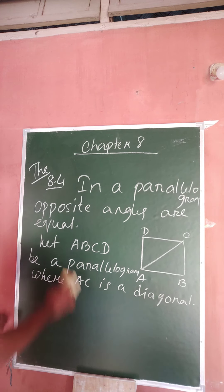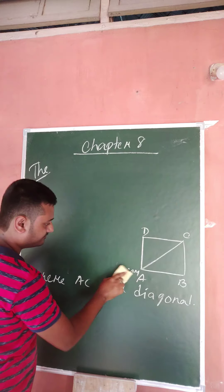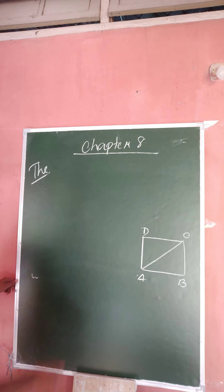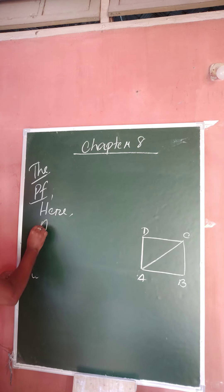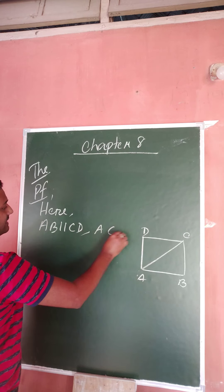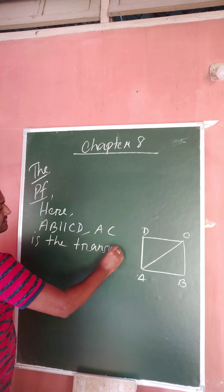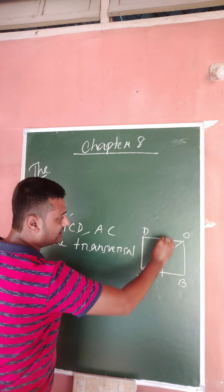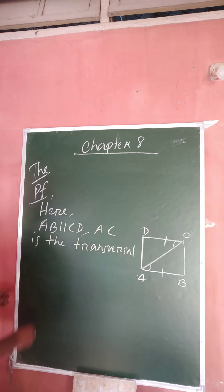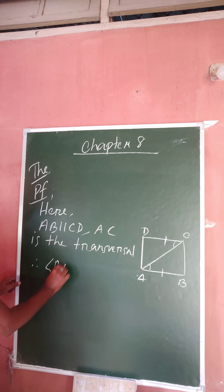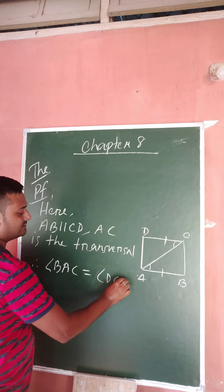In case of a parallelogram, opposite sides are parallel. So in this proof: AB is parallel to CD, and AC is the transversal. Since AC is the transversal cutting two parallel lines, this angle will be equal to this angle by alternate interior angles.